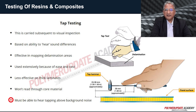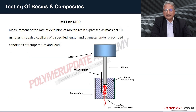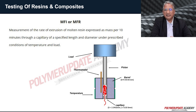For thermoplastic resin, melt flow index (MFI) or melt flow rate (MFR) is measured as the rate of extrusion of molten resin, expressed as mass per 10 minutes through a capillary of a specified length and diameter under prescribed conditions of temperature and load.